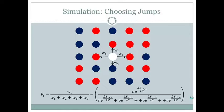Note that we could have considered the possibility that the vacancy did not jump, but then the value of the Debye frequency would be needed. When we use the probabilities instead of the actual jump frequency, the Debye frequency cancels out, and we can consider a general binary alloy. Now that we have the probabilities P1, P2, P3, and P4 of jumping to the respective lattice points, we can simulate what the vacancy at this lattice point, surrounded by these atoms, will do.